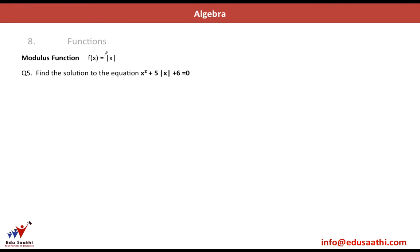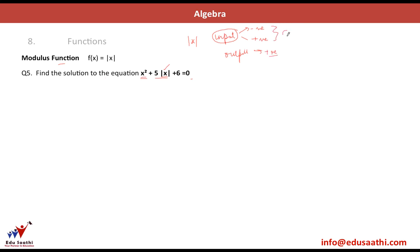The next question is based on modulus function: find the solution to x² + 5|x| + 6 = 0. Whenever you have mod x, you need to consider that the input can be positive or negative, but the output is always positive. So you need to make two separate cases for the input values.